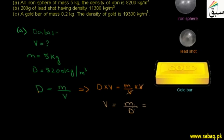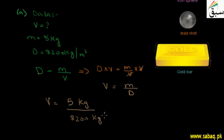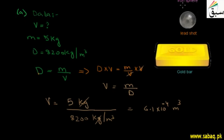Now we have mass in kg because the numerical quantities given are in SI units. Mass is 5 kg and density is 8200 kg per m³. The kg units cancel, so we have 5 divided by 8200, which gives the answer 6.1 × 10⁻⁴ m³. This is the volume of the iron sphere shown in the figure.